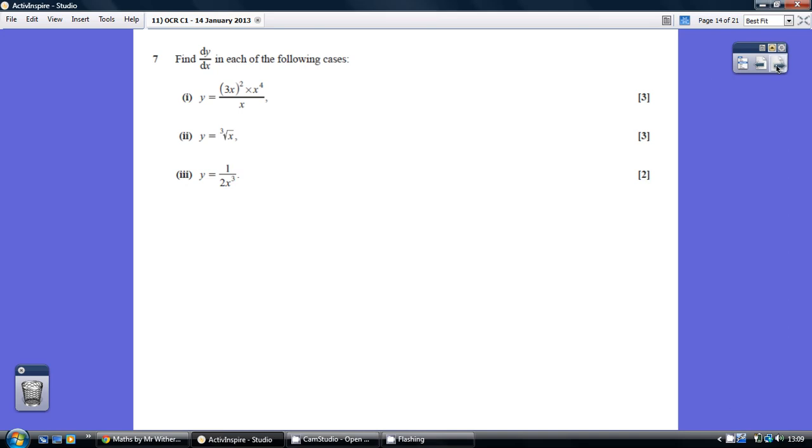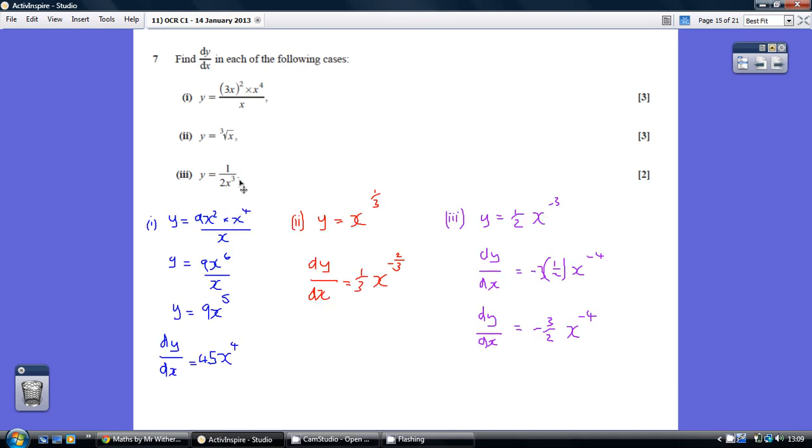Question 7. The problem is to get them into a suitable simple form to differentiate. Start off with 3x all squared, which means 3x times 3x, giving 9x squared.